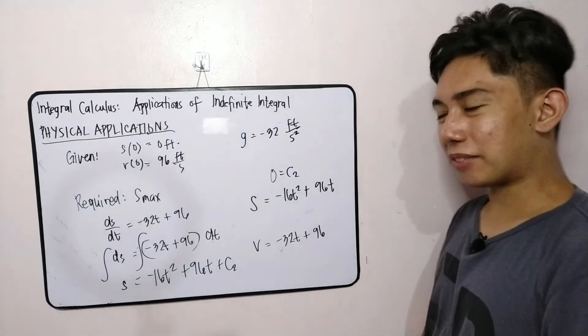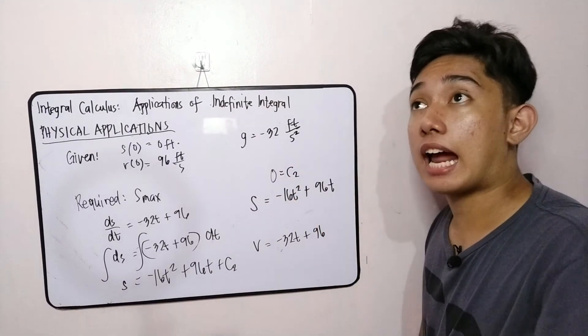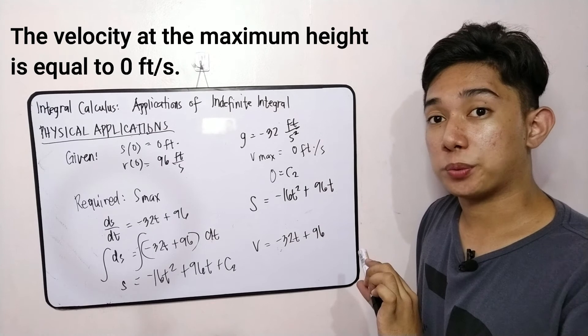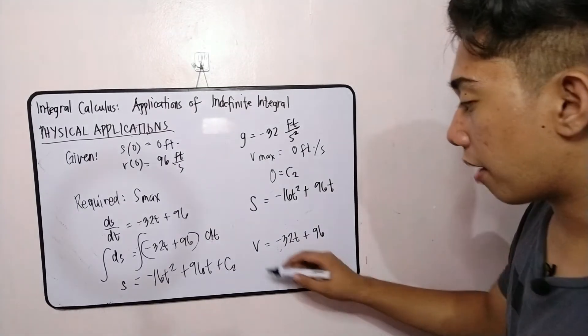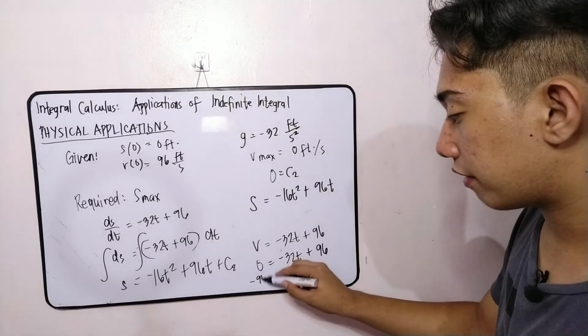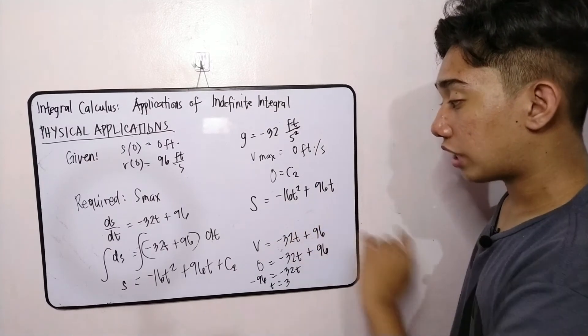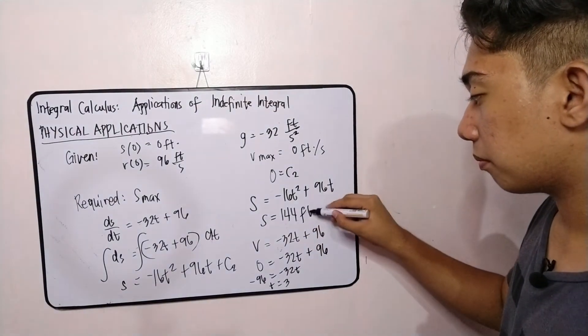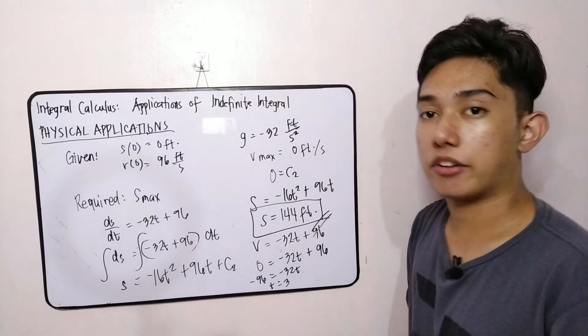So now, paano natin malalaman ang value ng s max? We will first discover the tract of that body. Since you will observe that the velocity at the maximum height is equal to 0 foot per second. So we have now this value. Then we can substitute it in our velocity function. So this becomes 0 is equal to negative 32t plus 96. Transfer this one. This becomes negative 96 is equal to negative 32t. And to simplify, t is equal to 3. You substitute 3 here so that it will become s is equal to 144 feet. So this is the maximum height attained by the body if it starts at 96 feet per second from the ground.